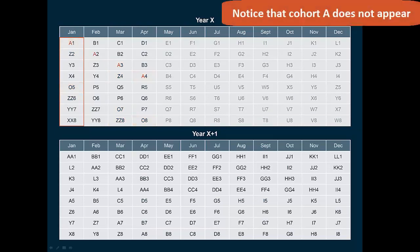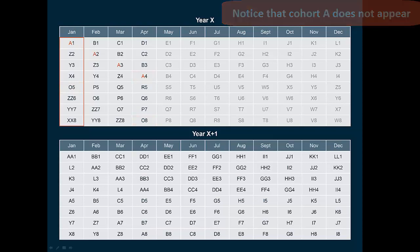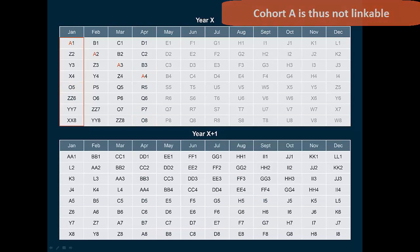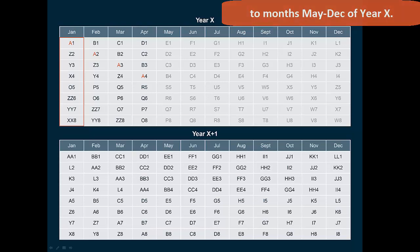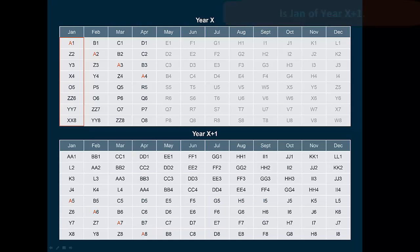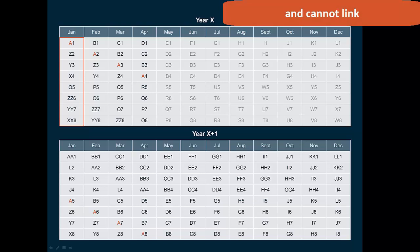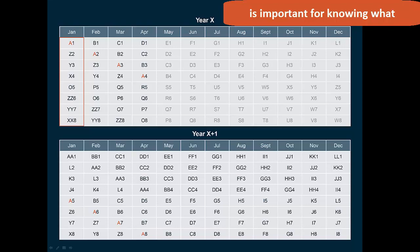Notice that Cohort A does not appear in year X after April. Cohort A is thus not linkable to months May through December of year X. The next possible month to which Cohort A can be linked is January of year X+1. Understanding which months can and cannot link, and how big the resulting linked sample will be, is important for knowing what information can and cannot be combined in the CPS.